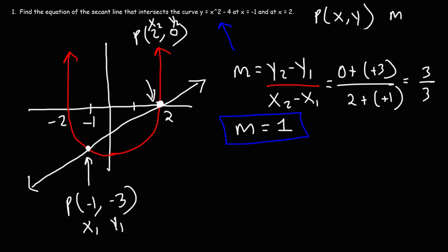Now the next thing is to write the equation of the line. So now that we have the slope, we can use the point slope formula. All we need is a point and a slope.